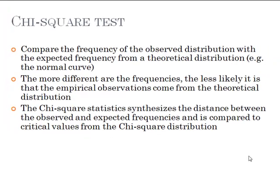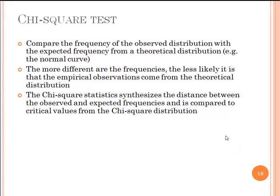Question number two is about chi-square test, which basically looks at the observed distribution and compares it with the expected frequency, for example a normal curve. The more different the frequencies are, the less likely it is that the empirical observations come from the theoretical distribution. The chi-square statistic is based on the difference between the observed and expected values.